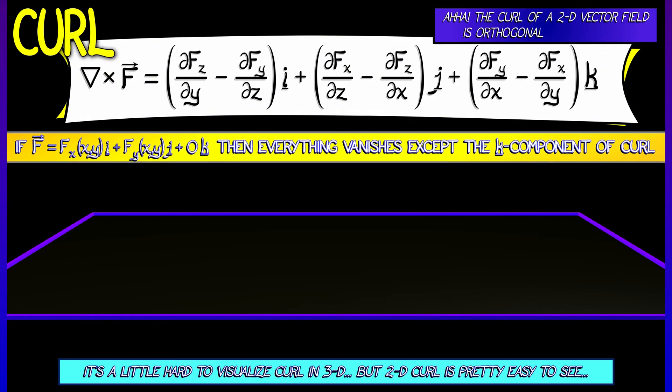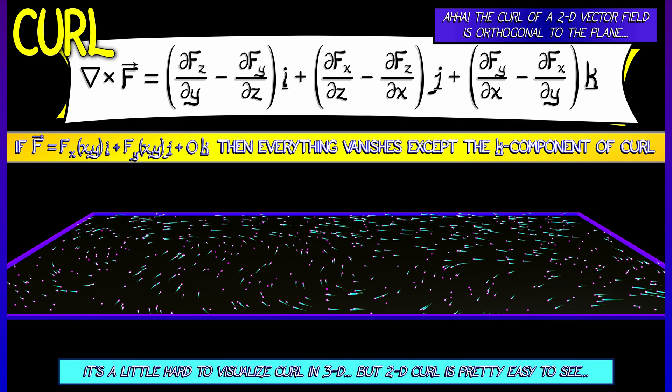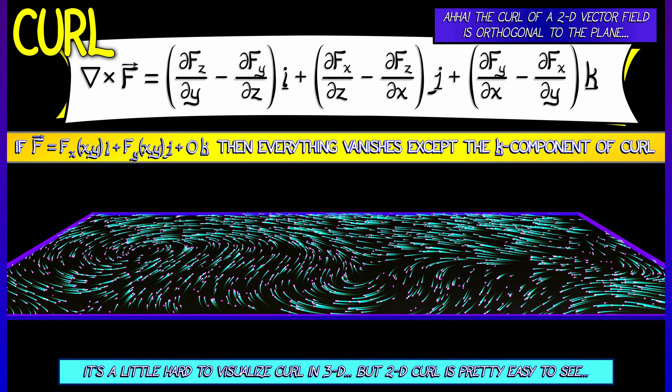This makes perfect sense when you've got a planar vector field, so no K component, no Z component. If you apply this formula, then what you get is that everything in the curl vanishes except the K component.